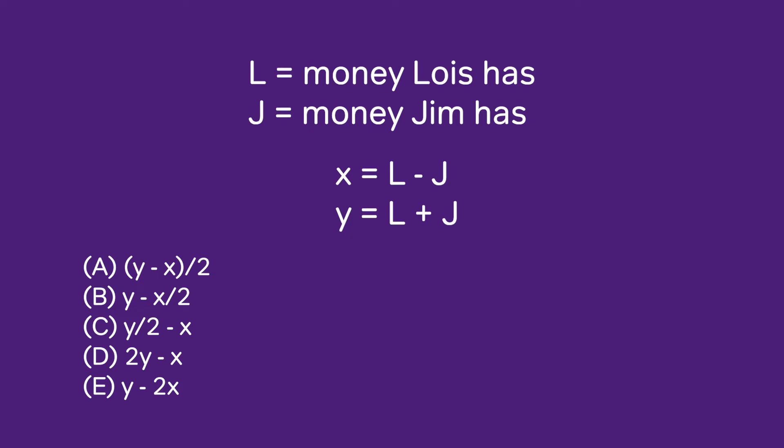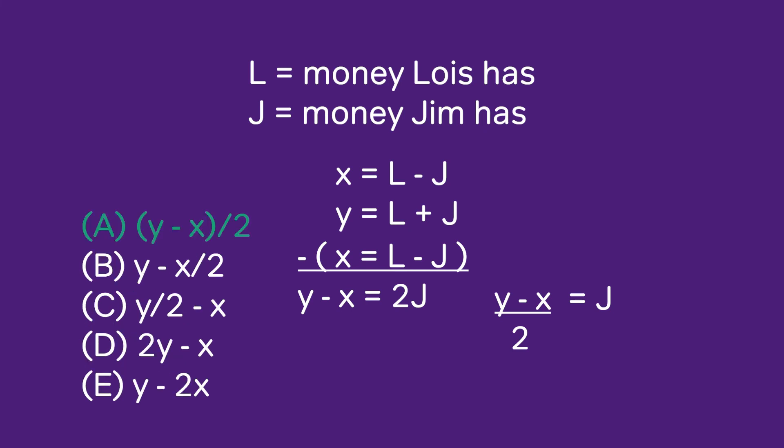What I'd like to do is solve for J. I'm going to subtract the x equation, and when I do that, the L's cancel. I get y minus x equals 2J, or y minus x over 2 equals J, and this is answer choice A.